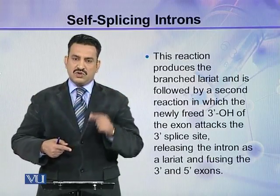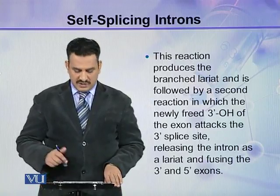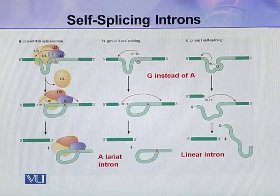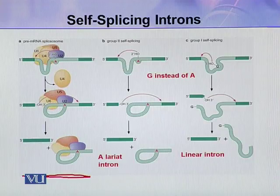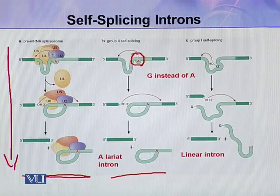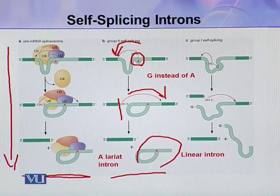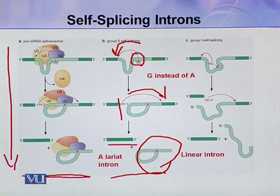These three steps are very similar to nuclear pre-mRNA splicing. This is a comparison of all three types of splicing: pre-mRNA spliceosome splicing, group 2 self-splicing where the 2'-hydroxyl of the A residue attacks the 5' splice site, the phosphodiester bond is broken, then attacks the 3' splice site, the lariat is relieved, and the two exons are joined.